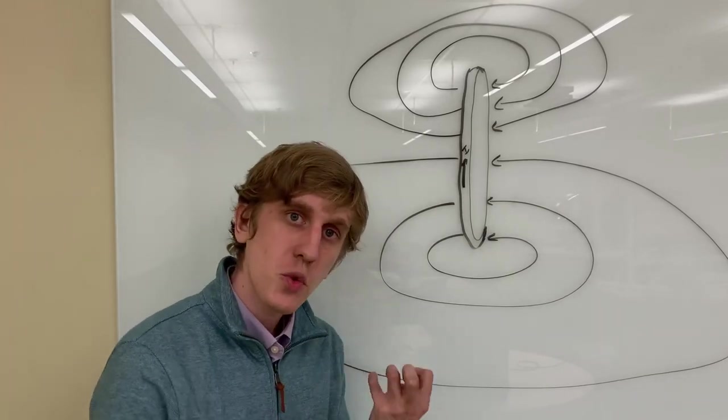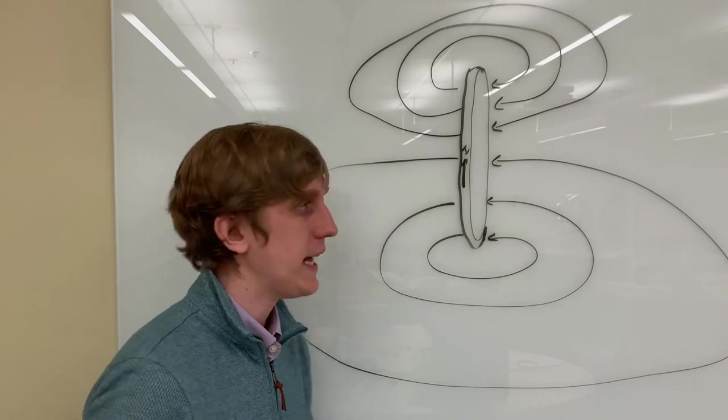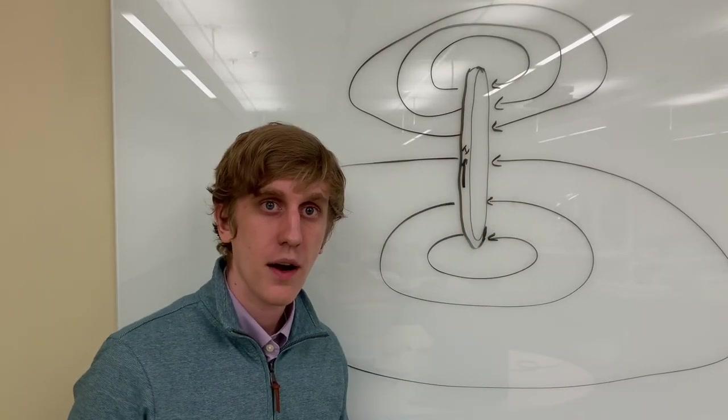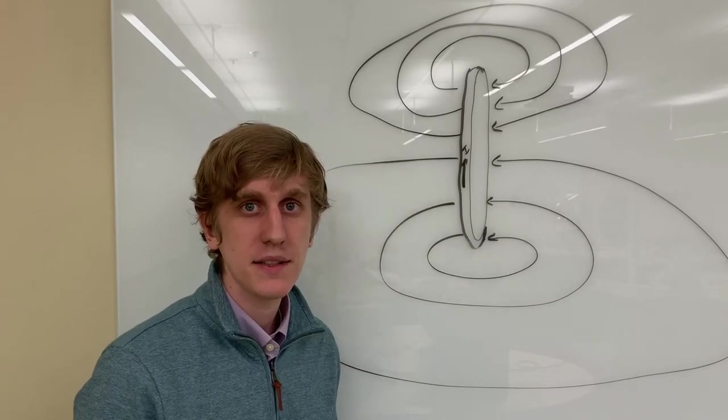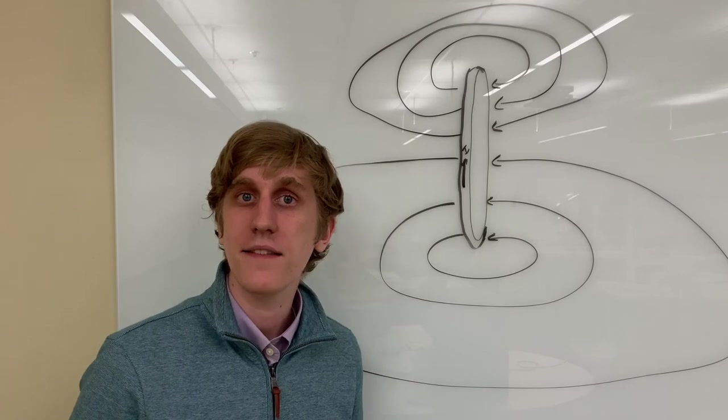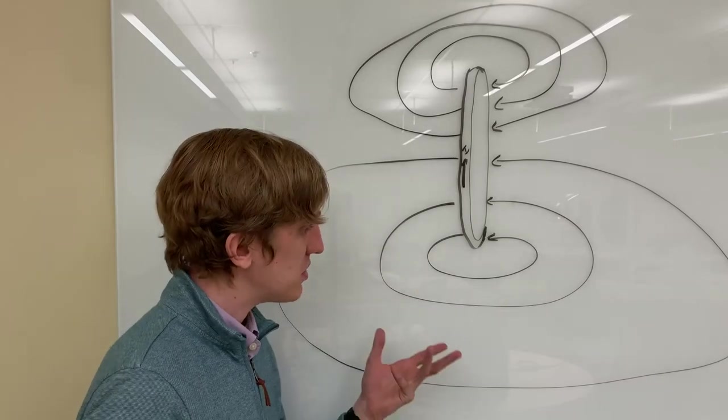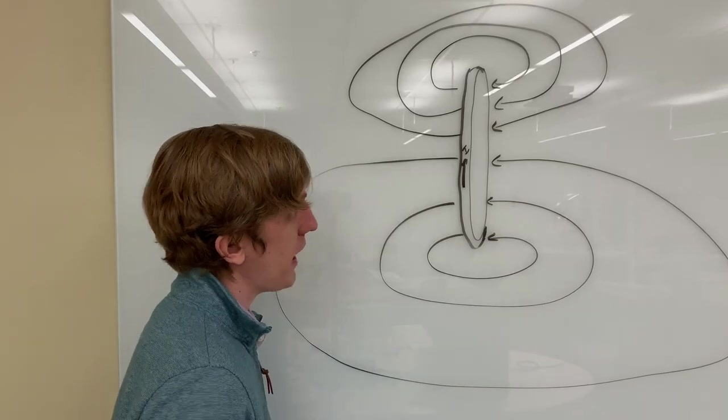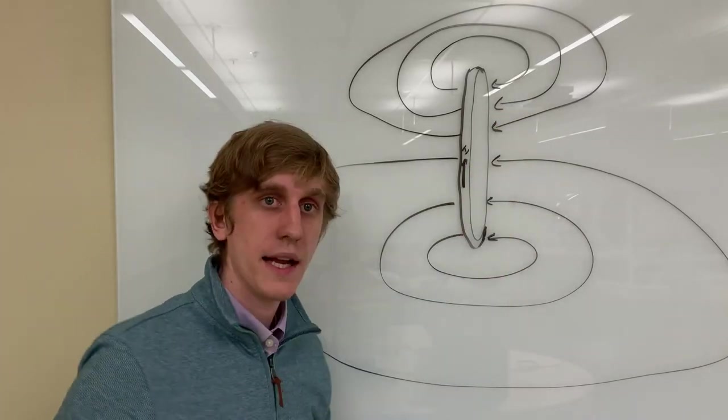We also know that the strength of the magnetic field is related to how dense the field lines in a particular area are. It probably makes sense that the farther we get away from the coil of wire, the weaker the magnetic field will be. That's represented in this diagram. Out here, the lines are very far away, while here, the lines are close together.